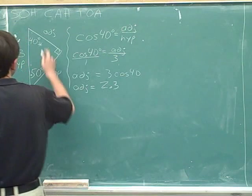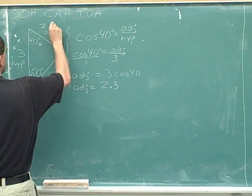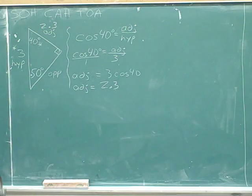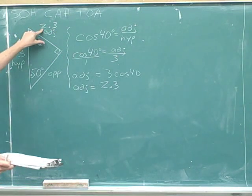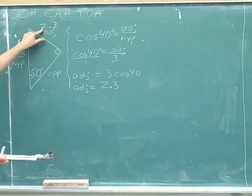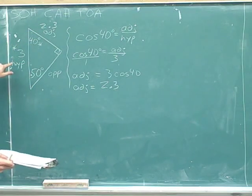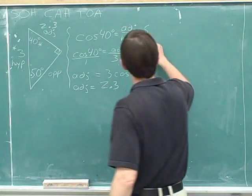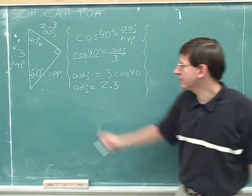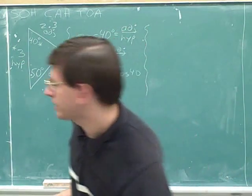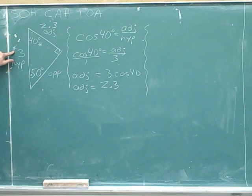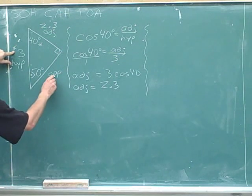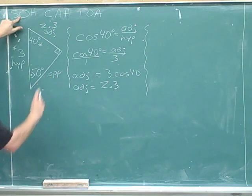Anytime you figure something out, you should put it into your sketch. So the adjacent side has a length of 2.3. I'm not going to put an asterisk here, to remind myself that 2.3 is not a number I was originally given — the only number I was originally given for a length was the 3. Now, how are we going to find the opposite side? The convention is that we want to figure out the opposite side using the information we were given about the hypotenuse.